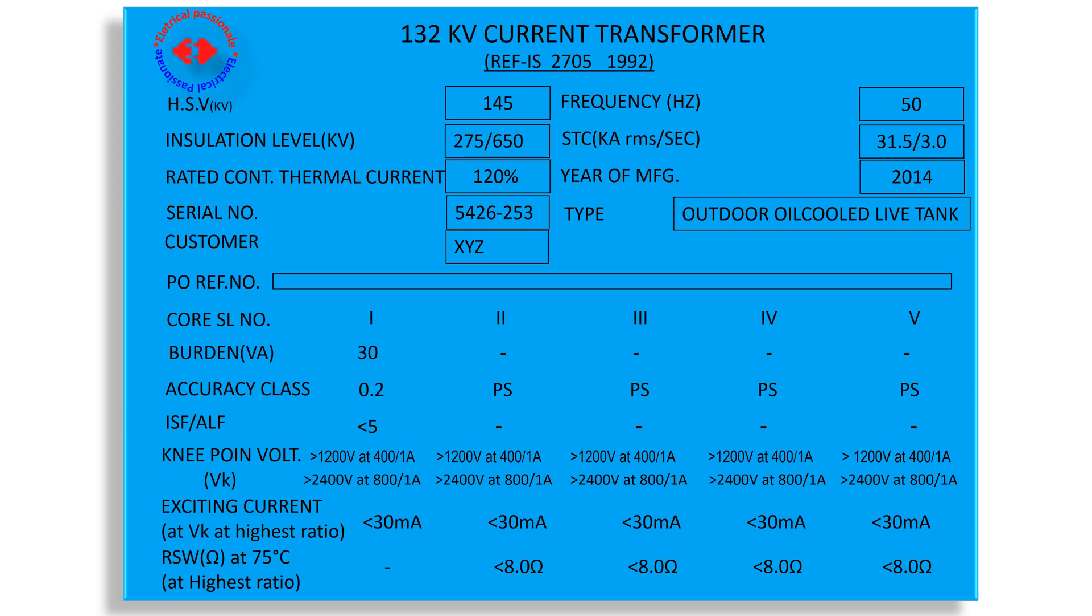Please look into the nameplate of a CT. It is a CT of 132 kV system. We become informed by watching the words 132 kV current transformer written at the top of the plate. It means nominal system voltage is 132 kV. Besides ANSV, nominal system voltage is written in many CT nameplates.